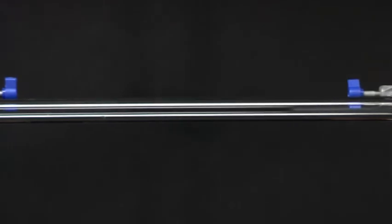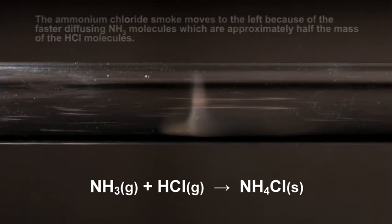As the vapors travel down the tube they meet and form solid ammonium chloride smoke at the junction. The smoke is